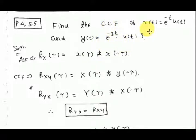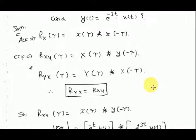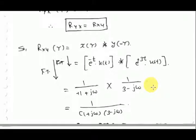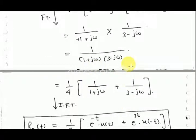Next problem: find the cross-correlation function (CCF). Previously we discussed the autocorrelation function; this question is about CCF. The cross-correlation function measures similarity between two different waveforms. Given x(t) and y(t), we calculate the CCF. Just as the ACF is x(tau) convolved with x(minus tau), the CCF is x(tau) convolved with y(minus tau). Using this formula, we get Rxy(tau). Taking the inverse Fourier transform gives the result.